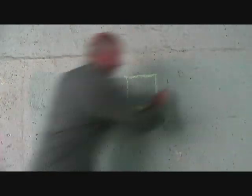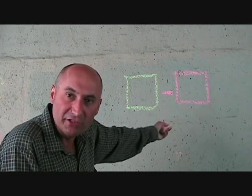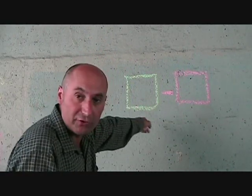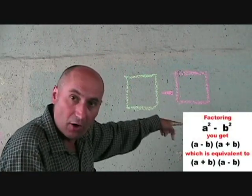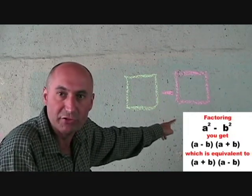So if we have one thing minus another thing, we can straight up factor this. It's just the square root of the first minus the square root of the second, all of it times the square root of the first plus the square root of the second, or vice versa. Plus or minus can be switched around.